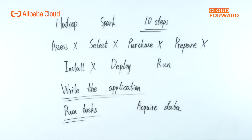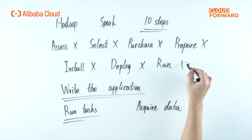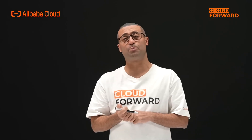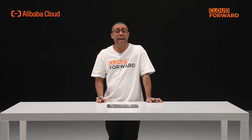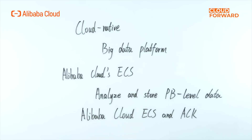The final three steps are clearly relevant to the user's application logic, whereas the seven steps of preparation are nothing but long and tedious standard procedures. Alibaba Cloud launched Elastic Map Reduce, or EMR, in this context to free users from time-consuming procurement, preparation, and O&M work, allowing them to focus solely on the processing logic of their applications. EMR is a cloud-native big data platform built on top of Alibaba Cloud's ECS.